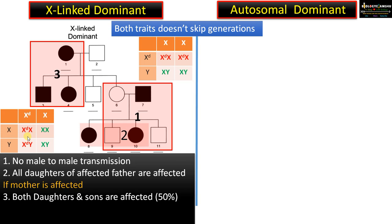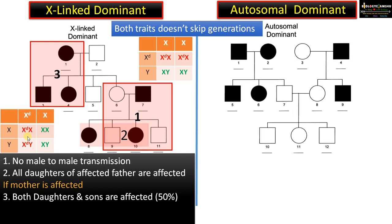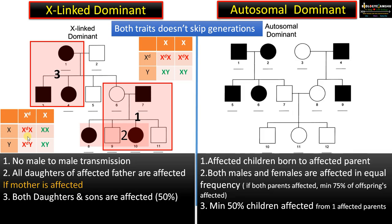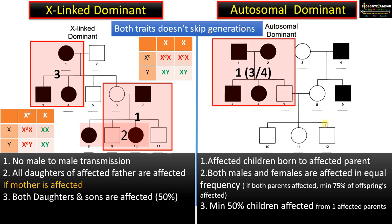Now moving into autosomal dominant trait. In the case of autosomal dominant trait, affected children are born to affected parents. As you can see here, both parents are not affected, therefore there is no disorder in this generation. Then both males and females are affected in equal frequency.